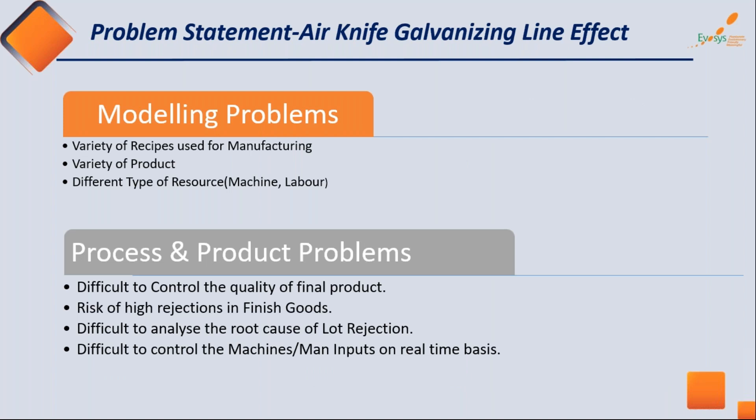Another use case — I'll be a bit faster here — is for process manufacturing: the air knife galvanizing line effect. This solution was designed for a particular industry, but it is not limited to air knife galvanizing. Any process manufacturing industry that has automated sensor parameters to be set for quality purposes can use this solution. The modeling problems are the same — variety of recipes, products, and resources.